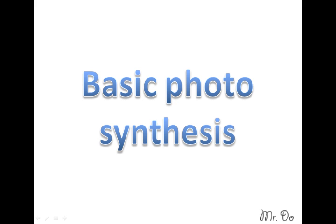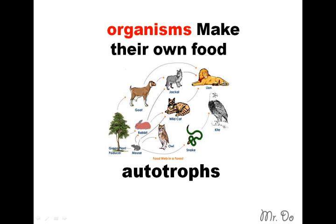Basic Photosynthesis. Organisms that make their own food are called autotrophs, like this guy.